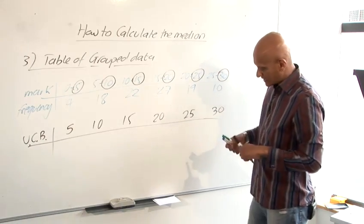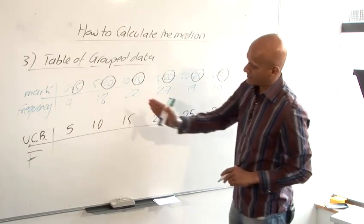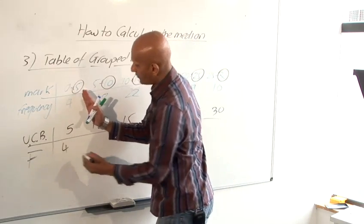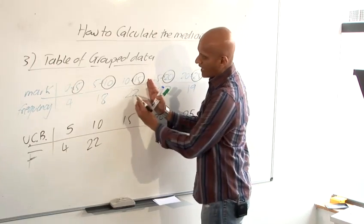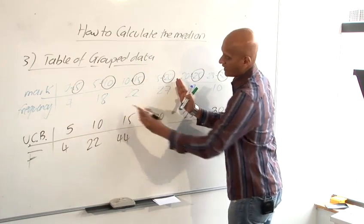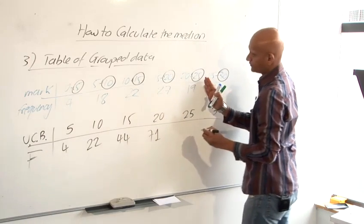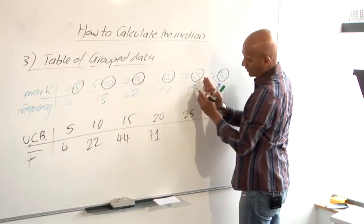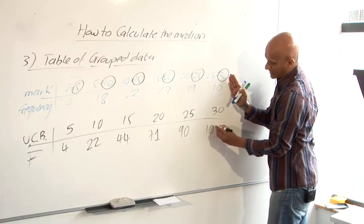And at the bottom, it's again still that capital F which means the cumulative frequencies. So the first one is just 4. The next one is those two added together, so 22. All of these three added together, so 44. All of these added together, so 71. All of those added, 90. And then the last one makes it 100.